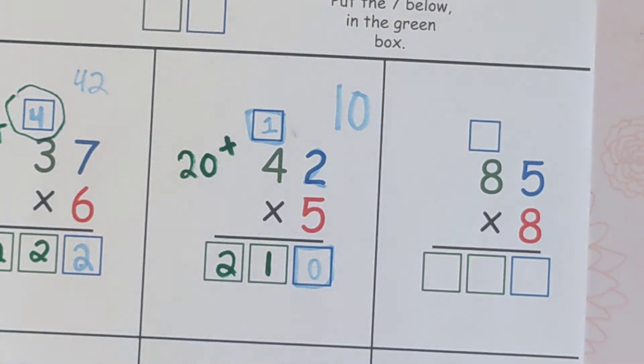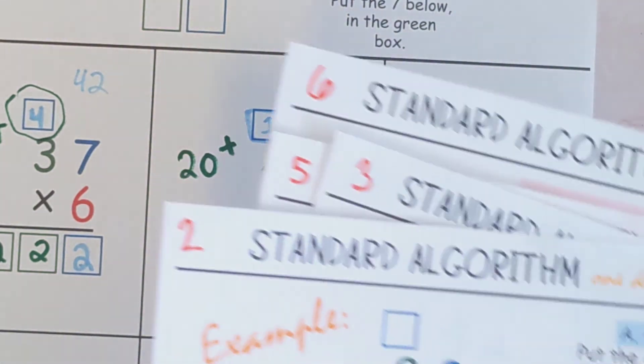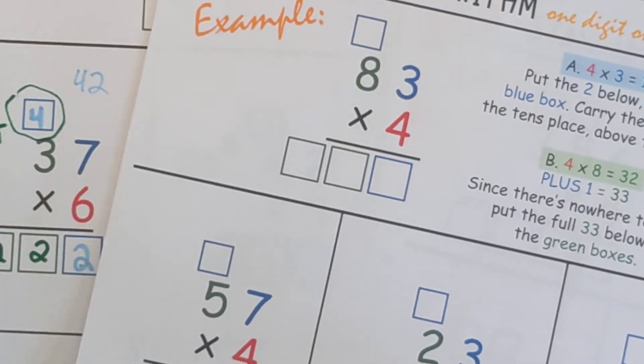So that's how you use a standard algorithm when there's one digit on the bottom. And again, if you want the rest of these worksheets, they'll walk you through and they have examples.